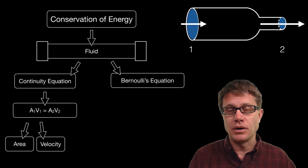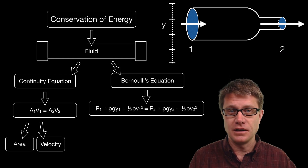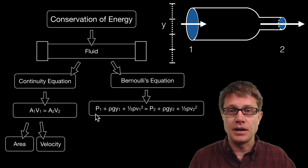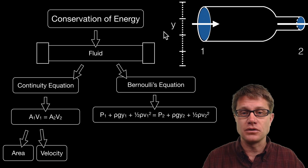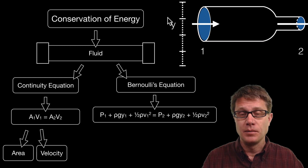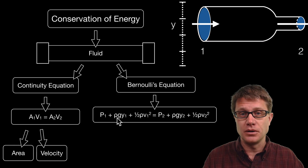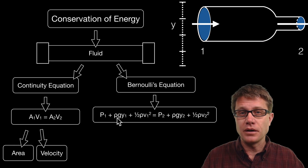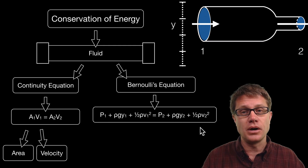If we look at Bernoulli's equation, it is somewhat scary when you see it the first time. But what we have really added here are simply two things: we have added y, which is the height of the pipe, because that is the potential energy; and rho, which is the density of the fluid, because those can affect the amount of energy that we have. The equation has a left side (point 1) and a right side (point 2).